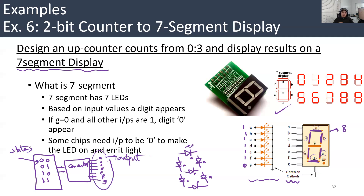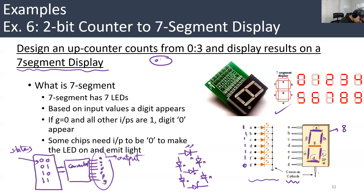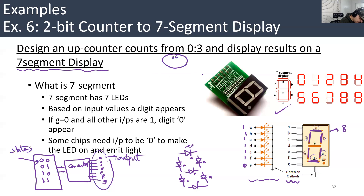This will be the states and this will be the output. This will be very clear when we draw the state diagram. So you have four states: 00, 01, 10, 11.